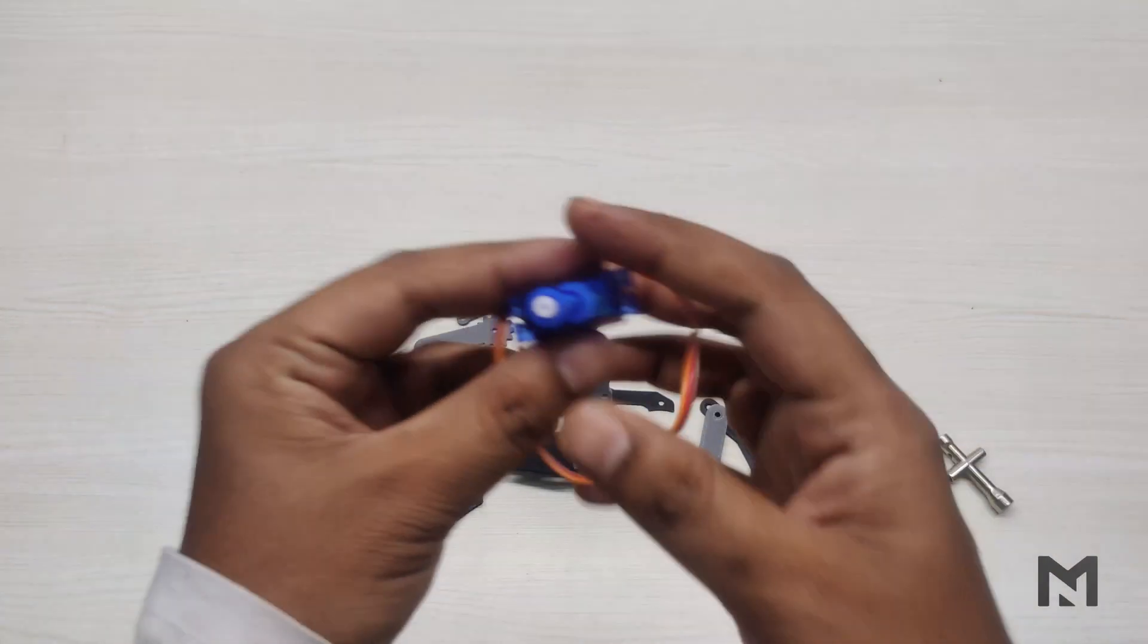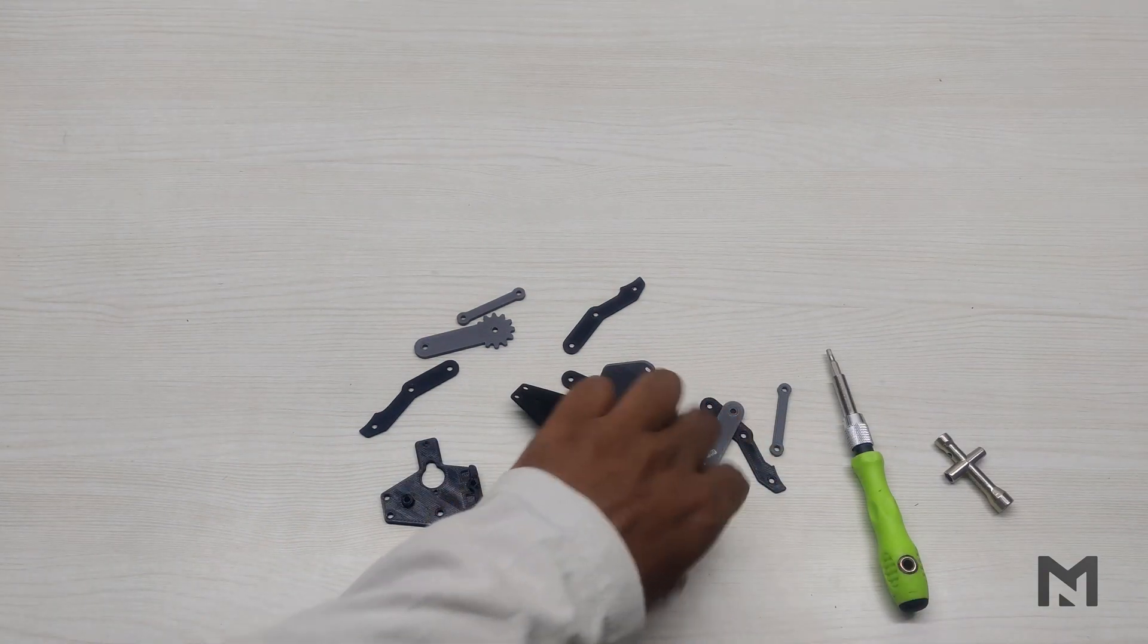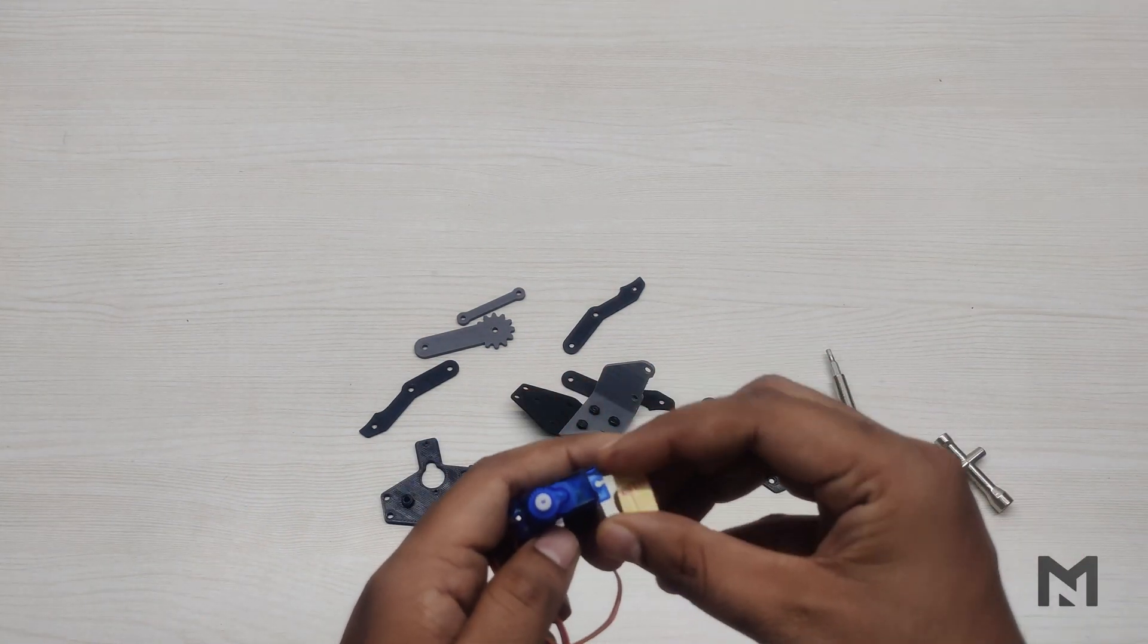I am using an SG90 servo for the claw. You can also use a metal gear servo. The best buy link for the parts is in the description. To fix the servo to the servo plate, I used double sided tape and then later fixed it with two long screws.